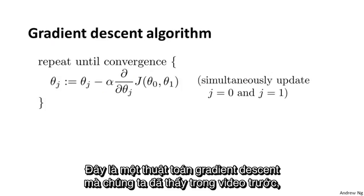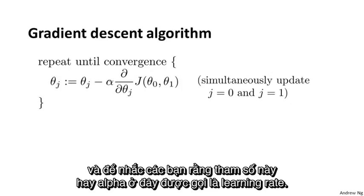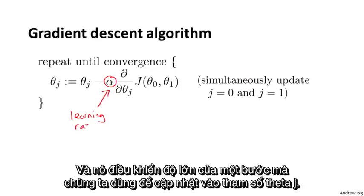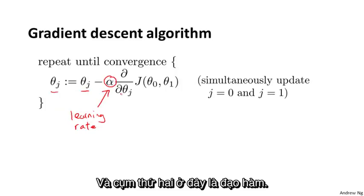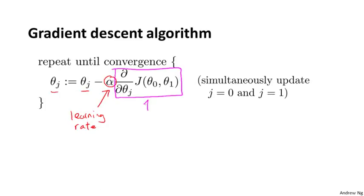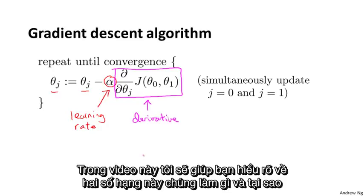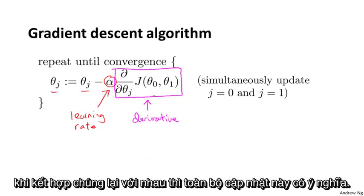Here's the gradient descent algorithm that we saw last time. This parameter alpha is called the learning rate, and it controls how big a step we take when updating the parameter θⱼ. And this second term here is the derivative term. I want to give you better intuition about what each of these two terms is doing and why, when put together, this entire update makes sense.